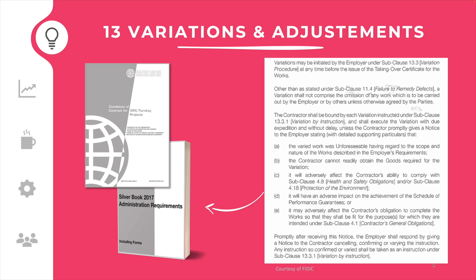The contractor shall execute instructed variations with due expedition and without delay, unless the contractor notifies the employer that the varied work was unforeseeable or the goods cannot be obtained, or it cannot comply with the health, safety and environment obligations, or has an adverse effect on a performance guarantee, or cannot comply with the FIDIC requirements. The employer representative shall respond by either cancelling, confirming, or varying the instruction for the variation.